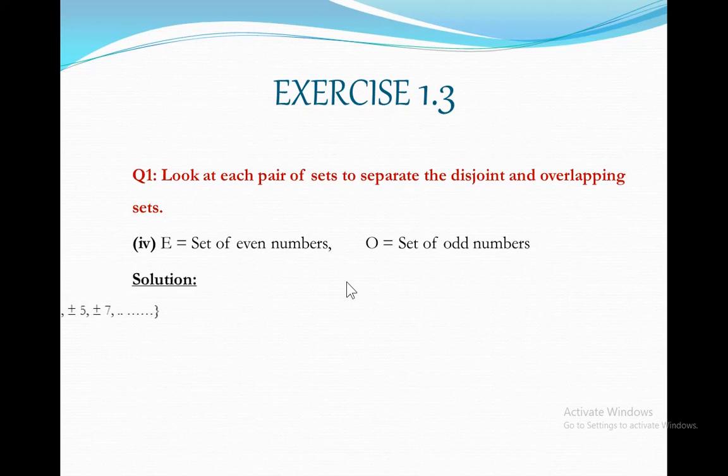Let's go towards solution. E, even numbers in tabular form, can be written as 0, plus minus 2, plus minus 4, plus minus 6, and so on. Whereas set of odd numbers in tabular form can be written as plus minus 1, plus minus 3, plus minus 5, plus minus 7, and so on.